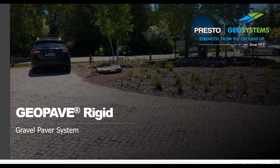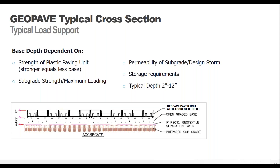Now switching to the GeoPave aggregate system. The typical cross-section has GeoPave panels at two inches in depth, with a possible base layer of aggregate underneath depending on subgrade strength and loading requirements. Sometimes a geotextile may be required but not always. Importantly, there is no choker or bedding course — everything is open-graded aggregate to allow maximum water infiltration. The biggest factor in determining whether a base is needed and its depth is your soil strength, typically expressed as the California Bearing Ratio (CBR) — the higher the ratio, the stronger your soil.